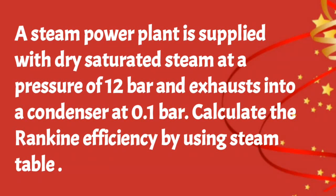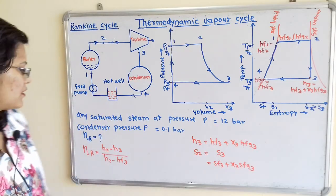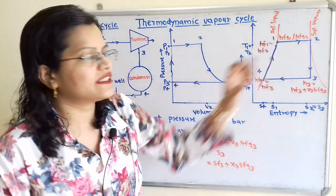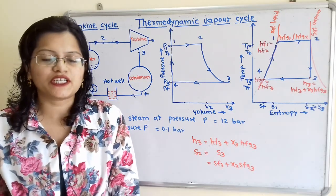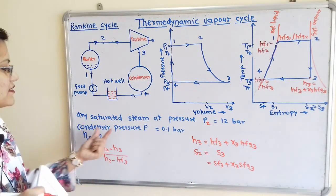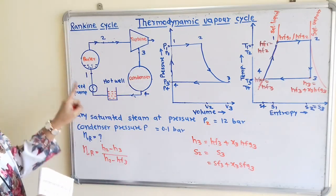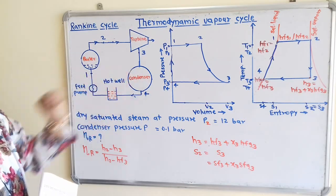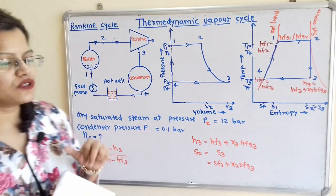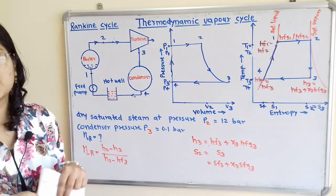Problem: A steam power plant is supplied with dry saturated steam at a pressure of 12 bar and exhausts into a condenser at 0.1 bar. Calculate the Rankine efficiency using steam tables. Given data: pressure at point 2, P2 equals 12 bar; condenser pressure P3 equals 0.1 bar.